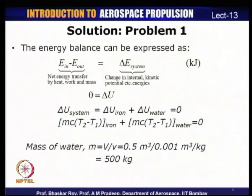The volume of water is 0.5 meter cube and the density of water is 1000 kg/m³, giving a specific volume of 0.001 m³/kg. So mass of water equals 0.5 divided by 0.001, which is 500 kilograms. We now know the mass of both iron and water, specific heats of both, and their initial temperatures.